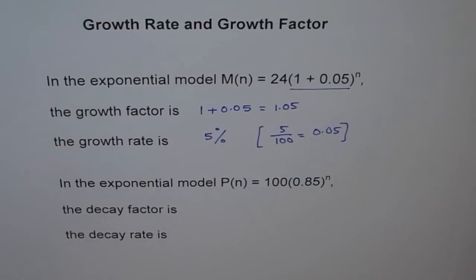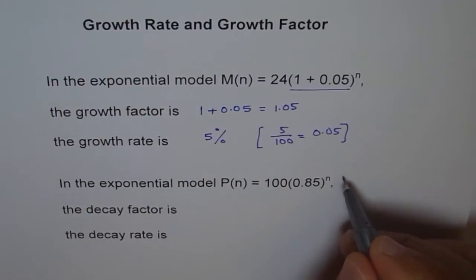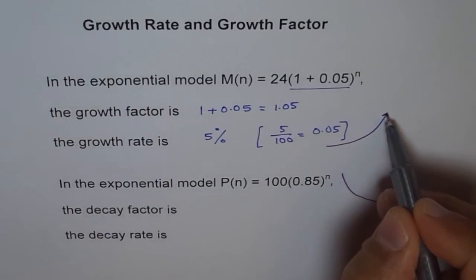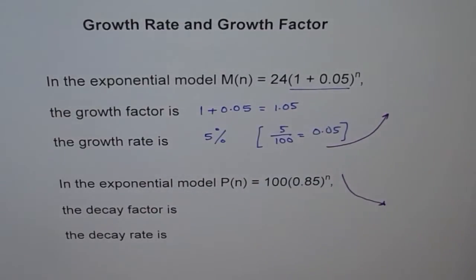Let's consider another one. And here, we see in the exponential model, P(n) equals 100(0.85) to the power of n. Now this number you're getting multiplied by is much less than 1. So here, if you see the graph, it will be exponentially decaying. In this case, it was exponential growth, so the term was growth factor.